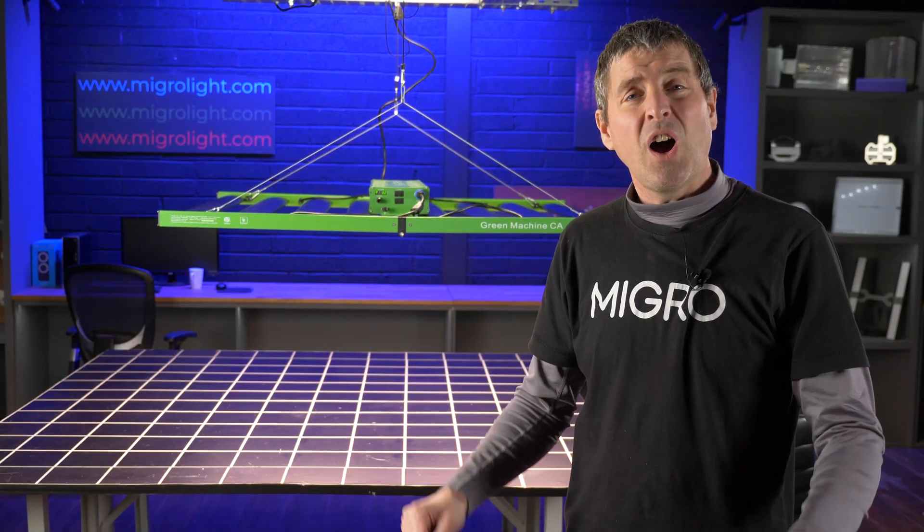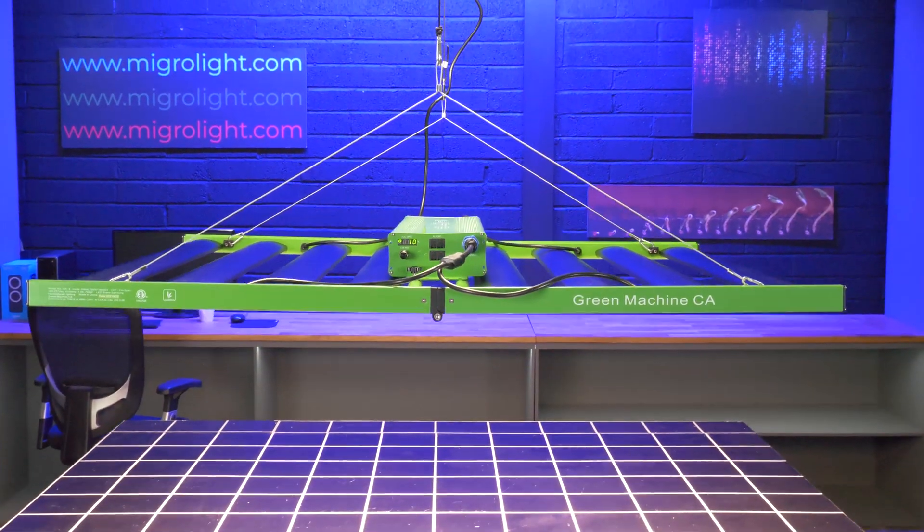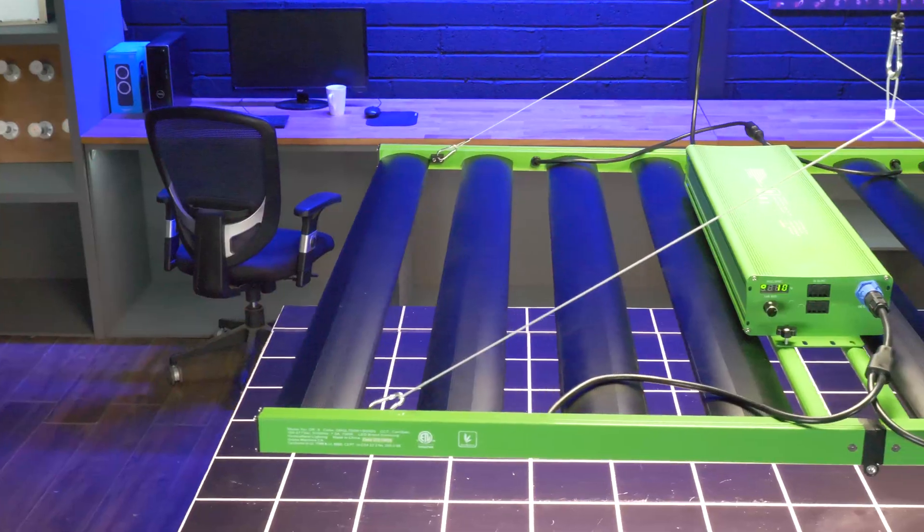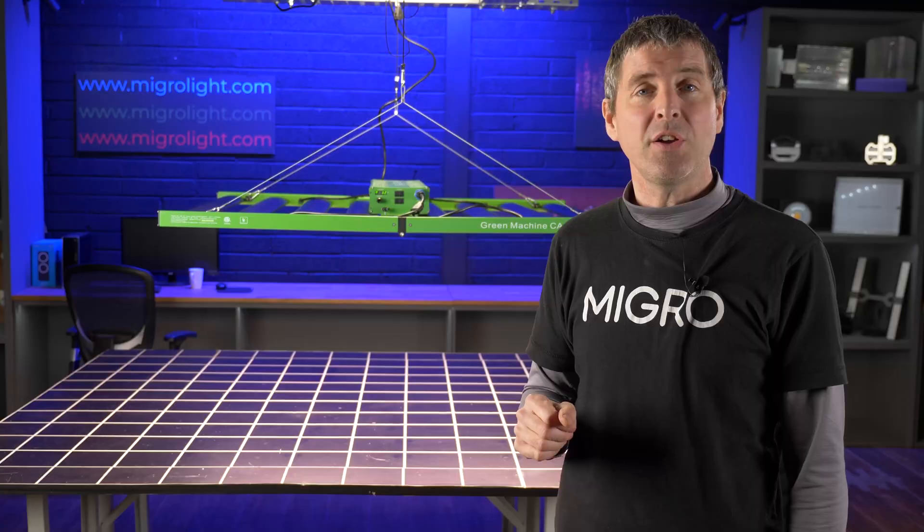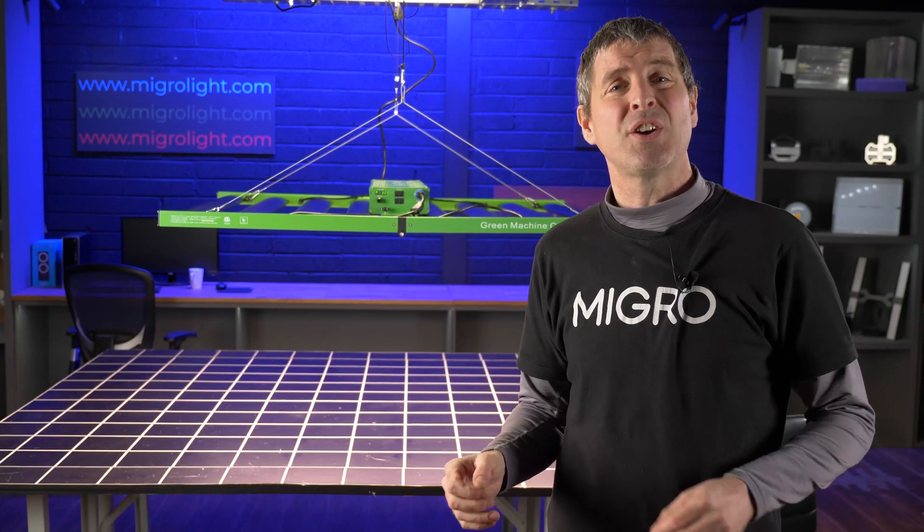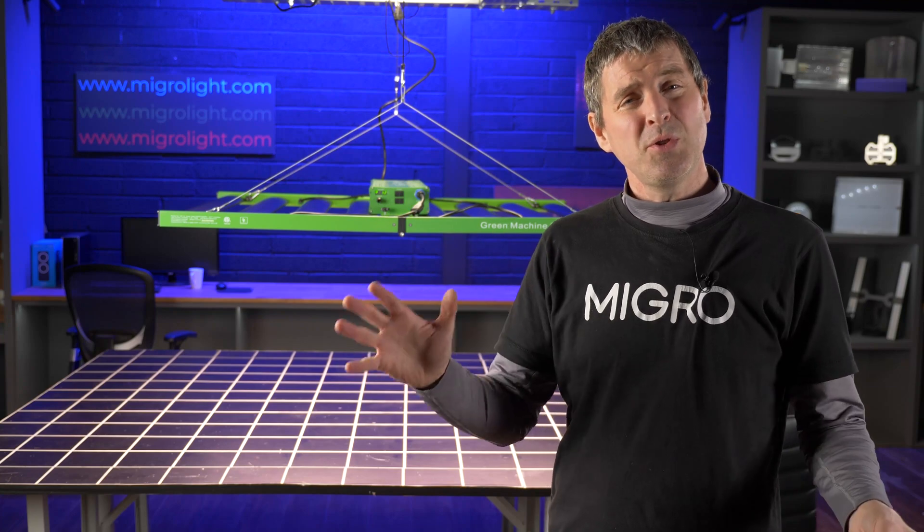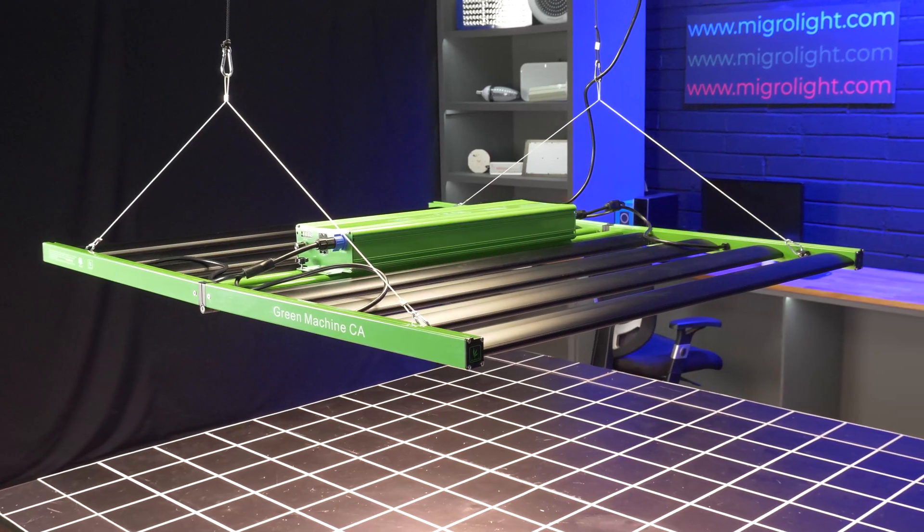This is a really high output, high efficiency fixture from Green Machine. The GR8 will give you an excellent spread in either a 4x4 with supplemented CO2 or a 5x5. And you have that unique feature of being able to boost the far red to a proportion which is much higher than any other grow light that I've tested. So it really is special to this model.